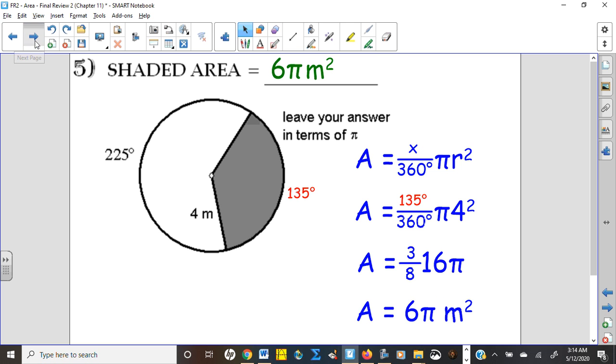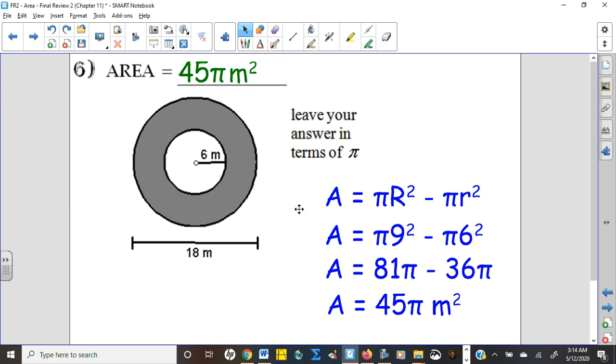Here's our annulus: big circle minus little circle. So be careful, the 18 is not the radius, right, that's the diameter, so we needed to take half of that and then do your squaring first and then you're subtracting, order of operations.